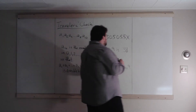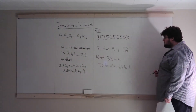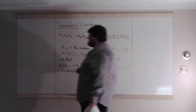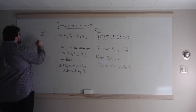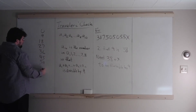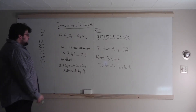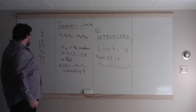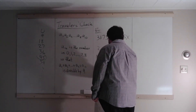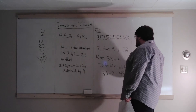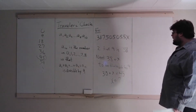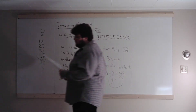We need 38 plus X to be divisible by 9. There are a few ways to figure this out — I think the easiest is to look at a list of multiples of 9: 0, 9, 18, 27, 36, 45, 54, and so on. What is the next number divisible by 9 above 38? That's 45. So we need 38 plus X to equal 45. Subtract 38, you get X equals 7.